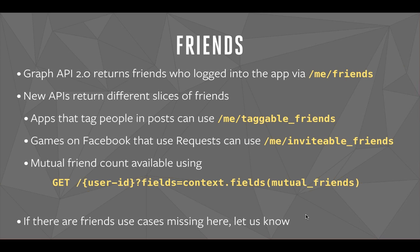There are fundamental changes to friend permissions with the new Login. The most fundamental change is that people can now deselect their friend list — they don't have to share their friend list with apps if they don't want to. To help with common use cases around this, we're introducing two new APIs: the Taggable Friends API that helps you tag people in posts from your app, and the Invitable Friends API, currently limited to games, which allows users to invite their full list of Facebook friends.